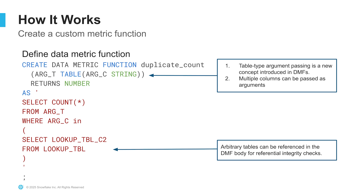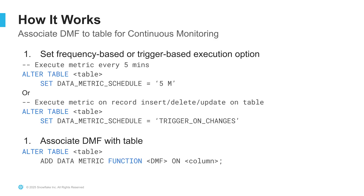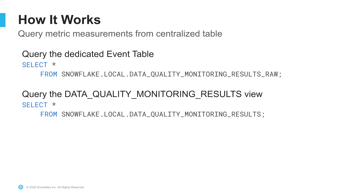When creating a custom data metric function, you create the DMF object, which lives within a schema and database. A table argument is passed in, and multiple columns can be passed in as arguments as well. In the definition, you can specify arbitrary SQL and arbitrary tables that can be referenced for integrity checks. Then you need to set up a data metric schedule on that object first. You can specify a frequency-based execution using cron expressions or a trigger-based execution when the data changes. Once you have the schedule set, you associate that data metric function to the table of interest on a specific column. You can then query the dedicated event table or the data quality monitoring results view.